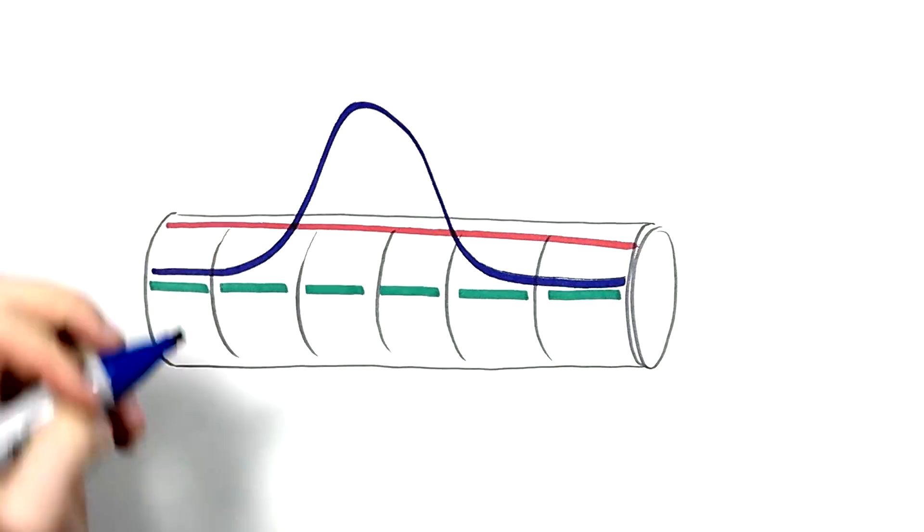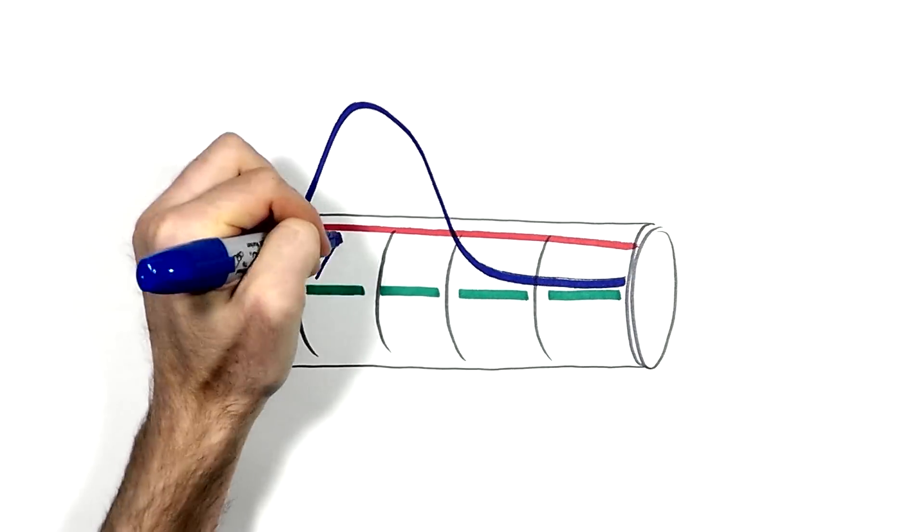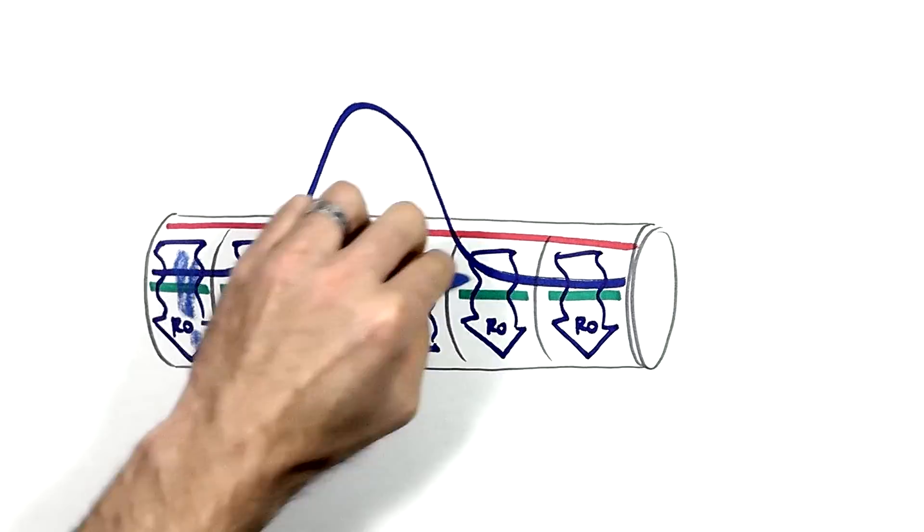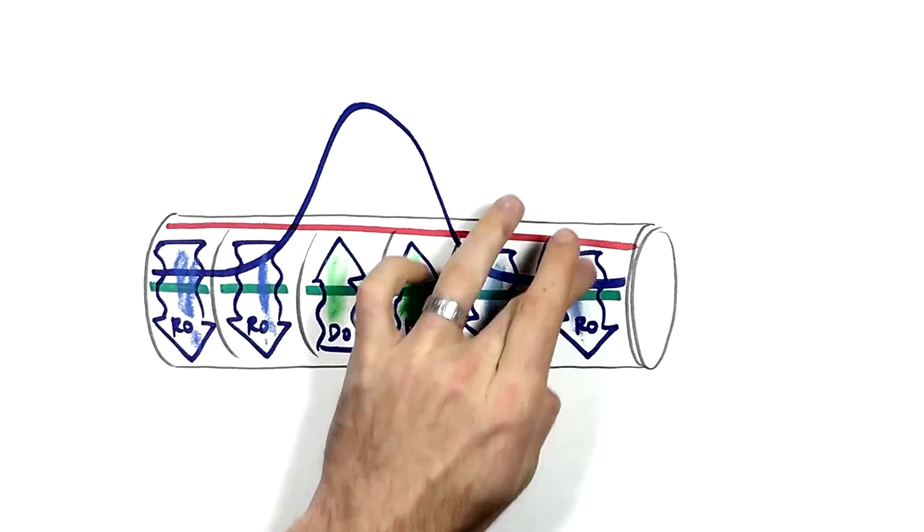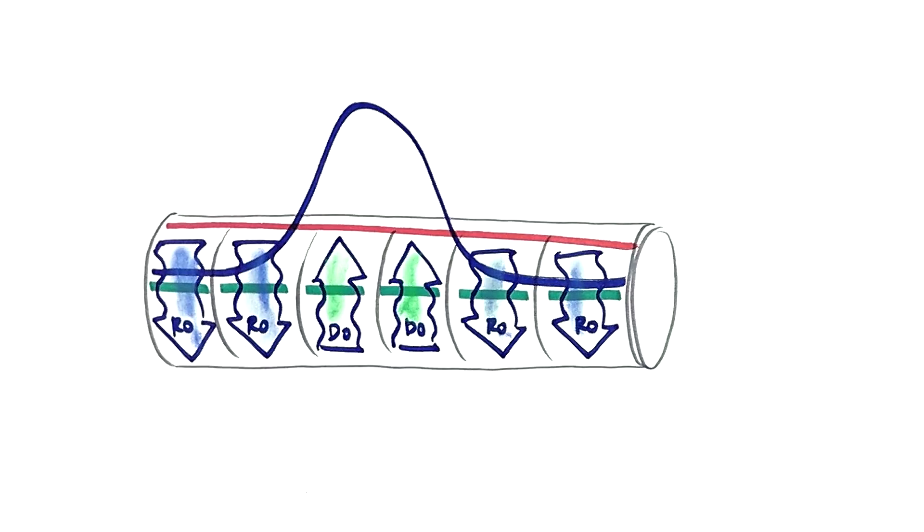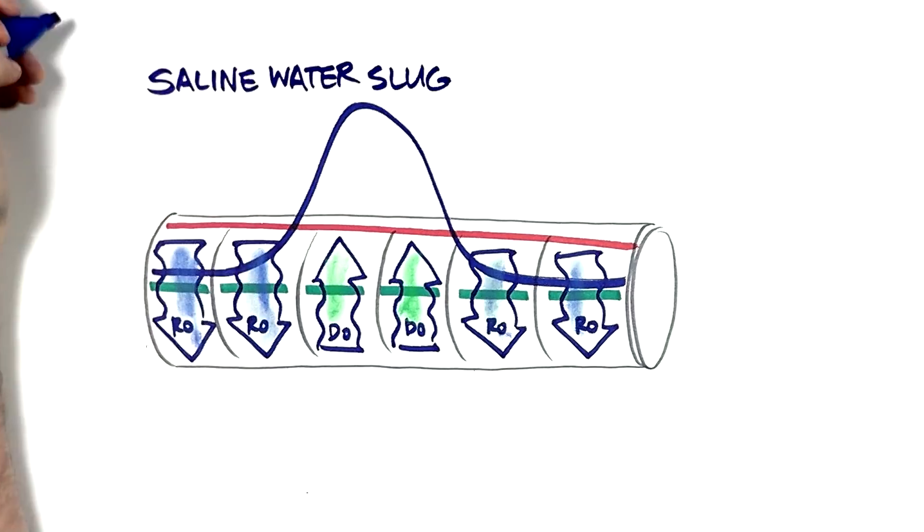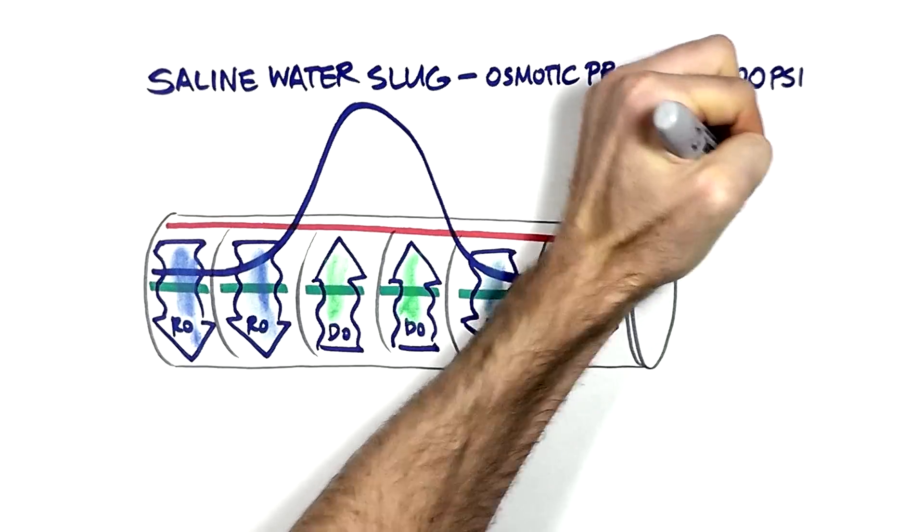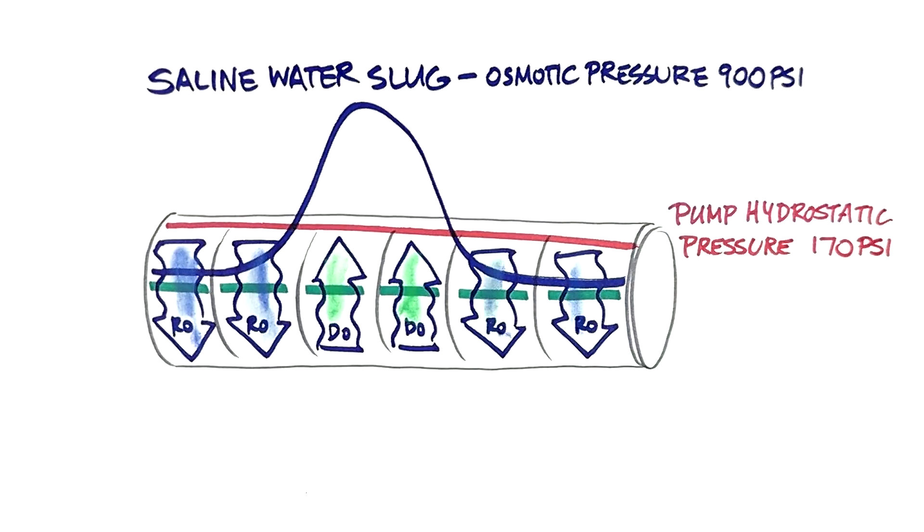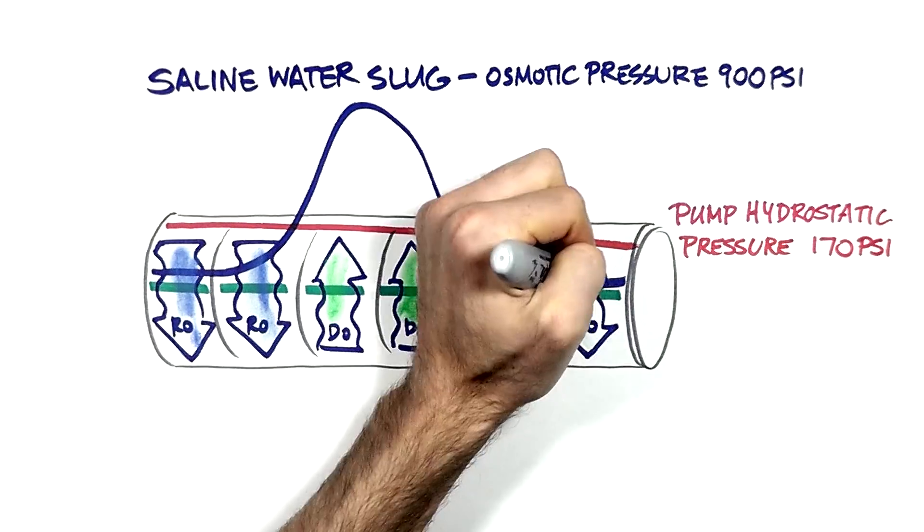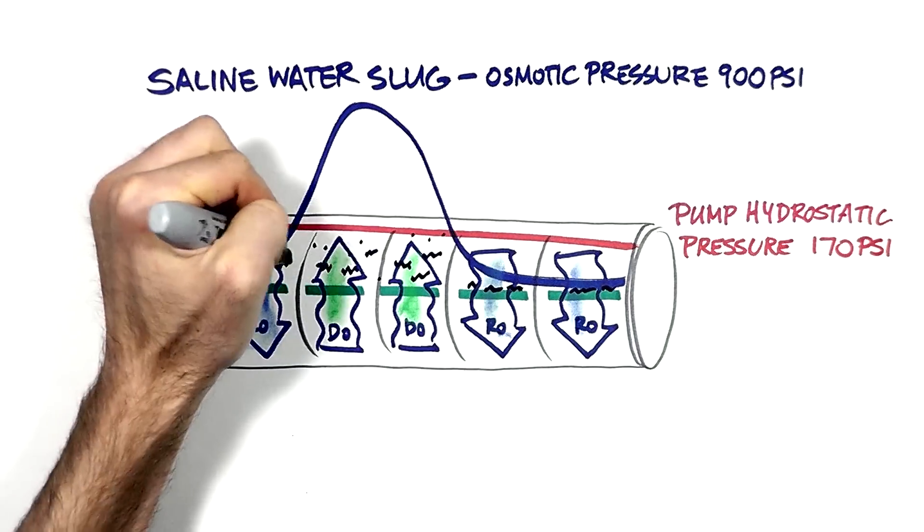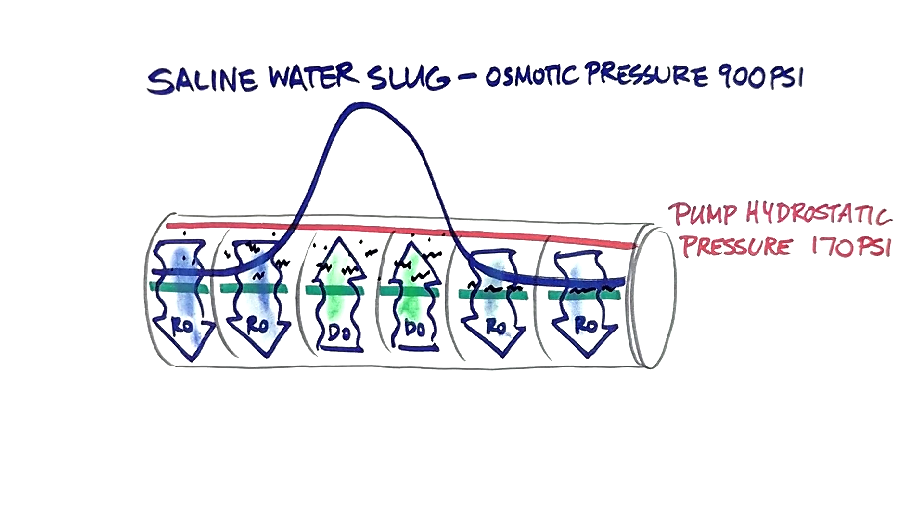At this moment, the slug is on the third and fourth membranes. Here, the process changes from reverse osmosis to direct osmosis. This phenomenon takes place because the osmotic pressure of the slug at 900 psi is above the pump's hydrostatic pressure of 170 psi. Now, the permeate moves from the permeate spacer back through the membrane and into the saline water slug. Local permeate upflow provides intensive membrane backwash.